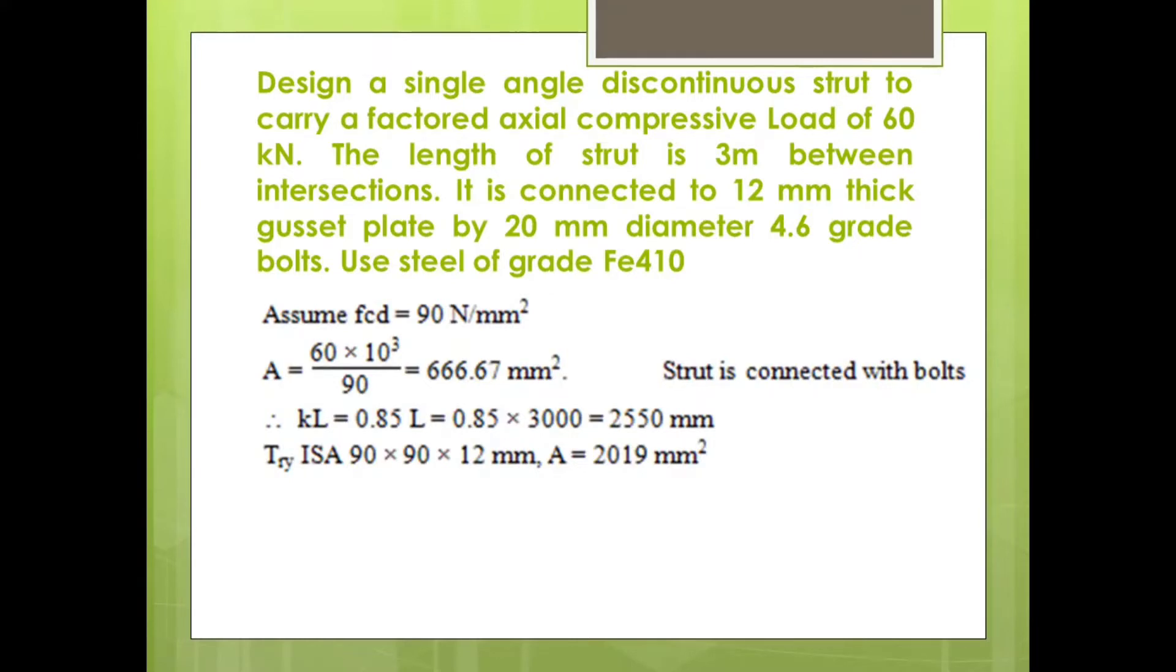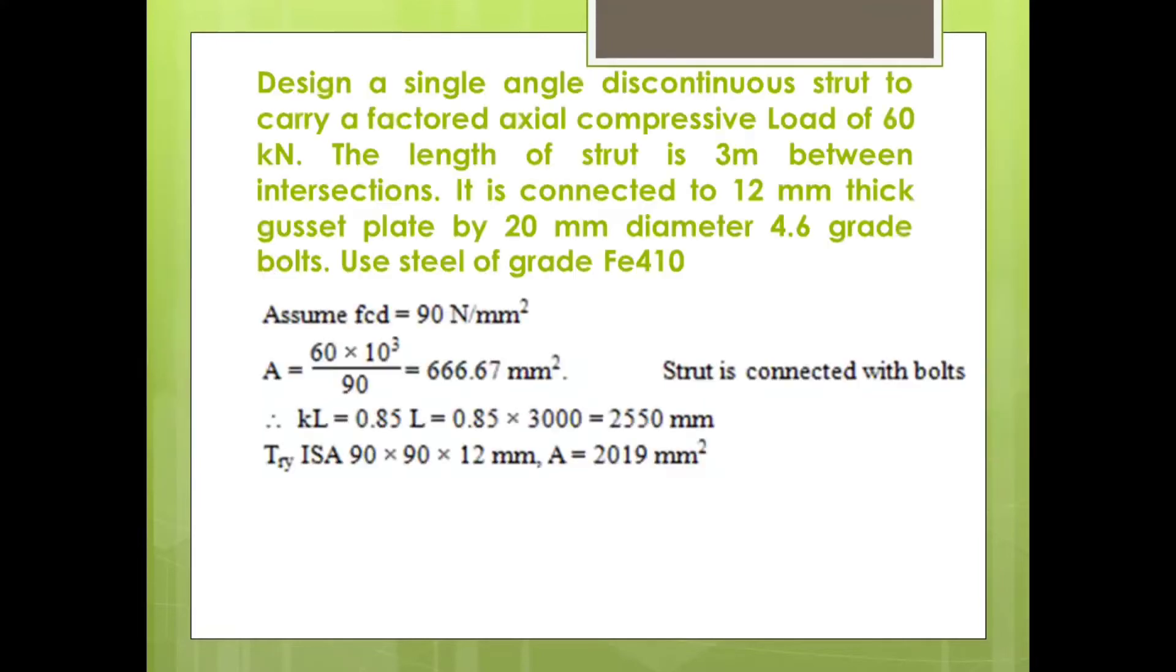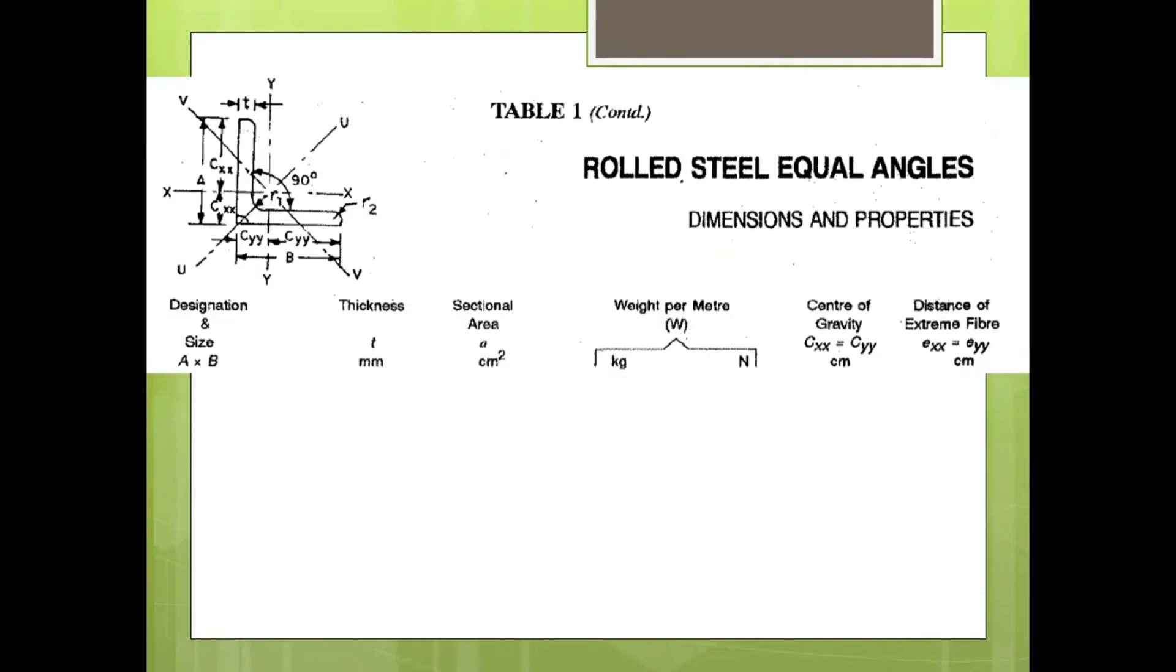Now we need to find such angle section whose area is approximately 666.67 mm square. So if you see, this is equal angle section and what we have done, we have selected 90 by 90 by 12 mm. So for 90 by 90 by 12, if you see the last row here, its area is 2019 mm square.